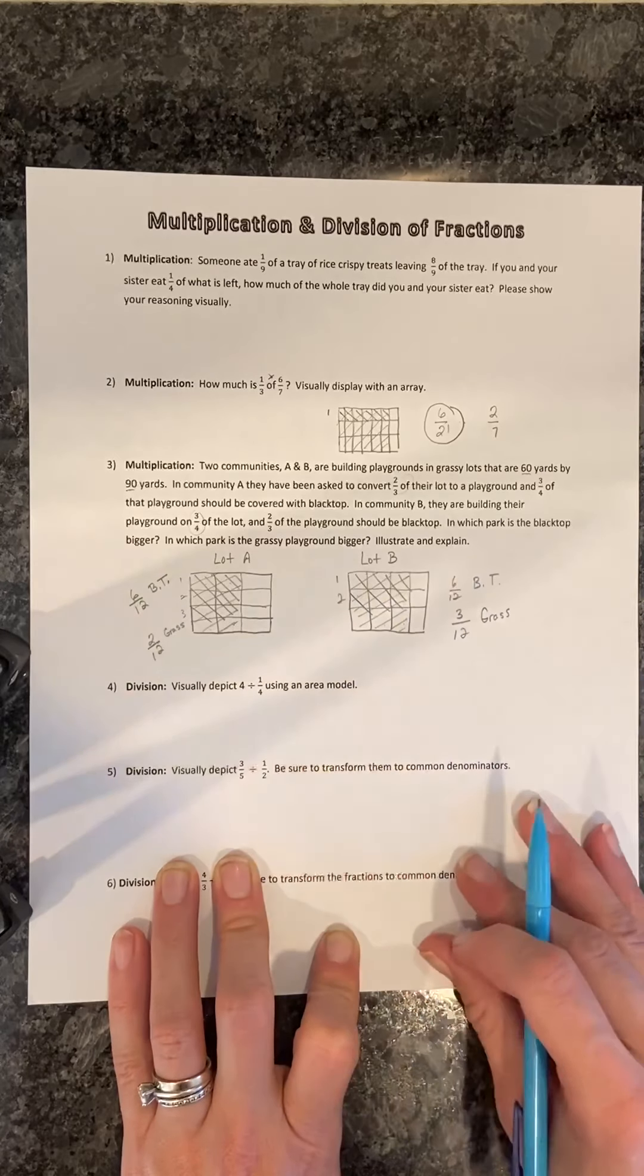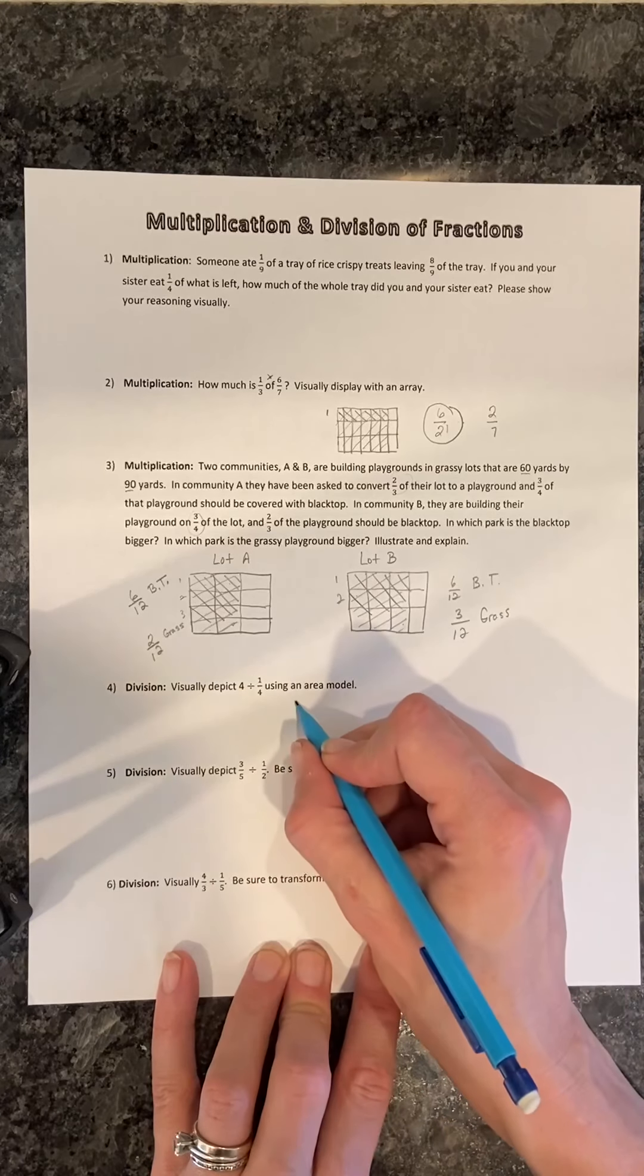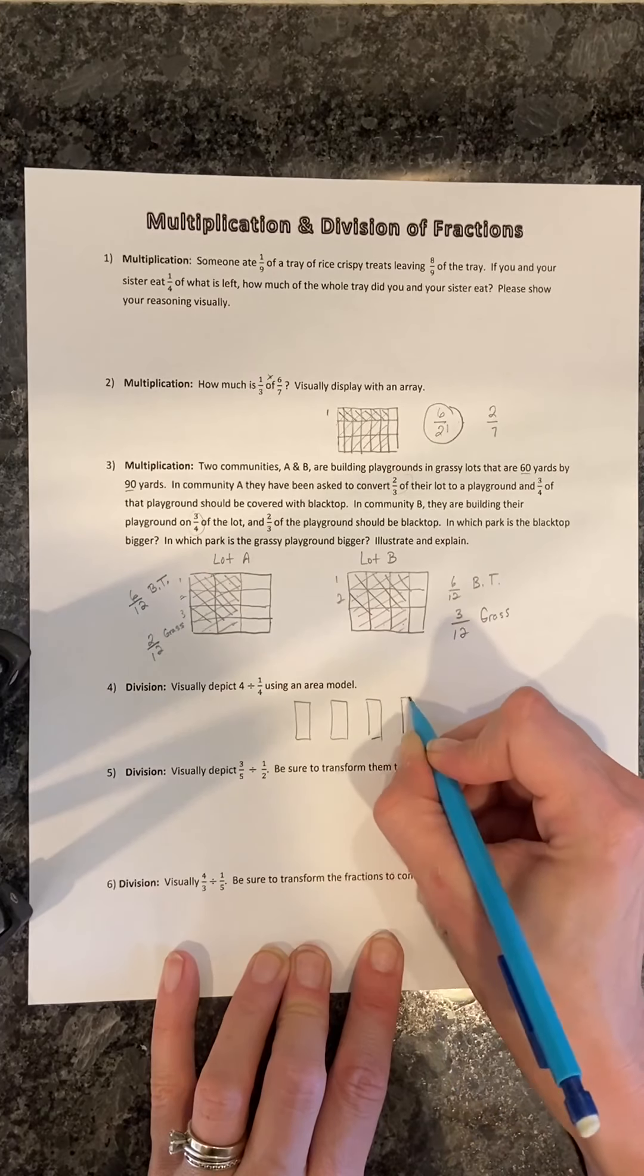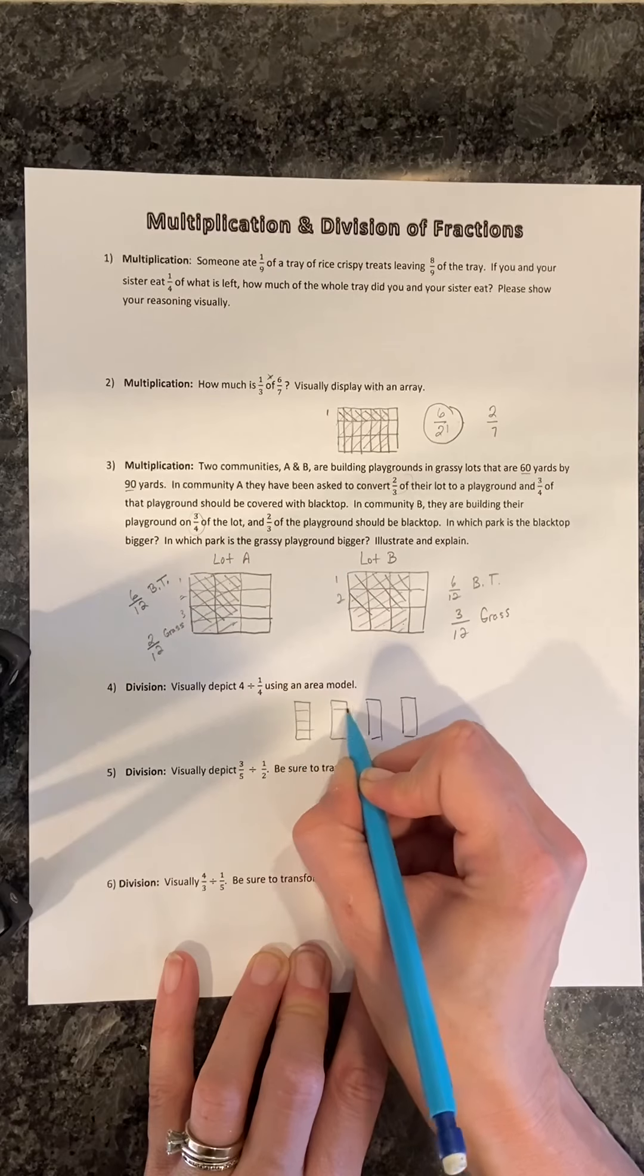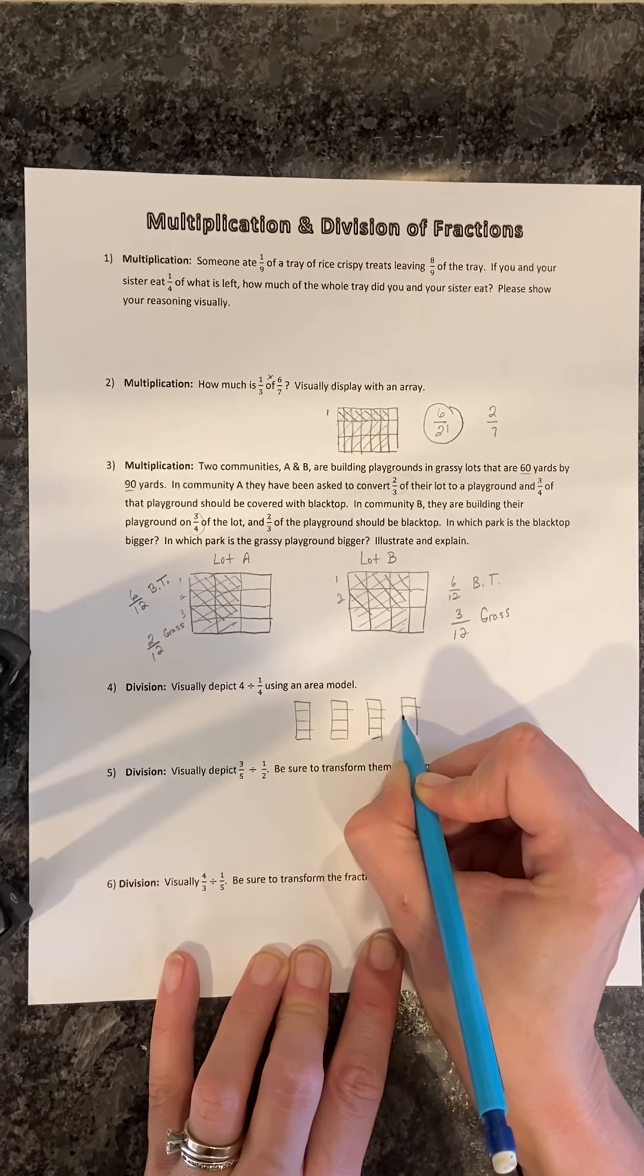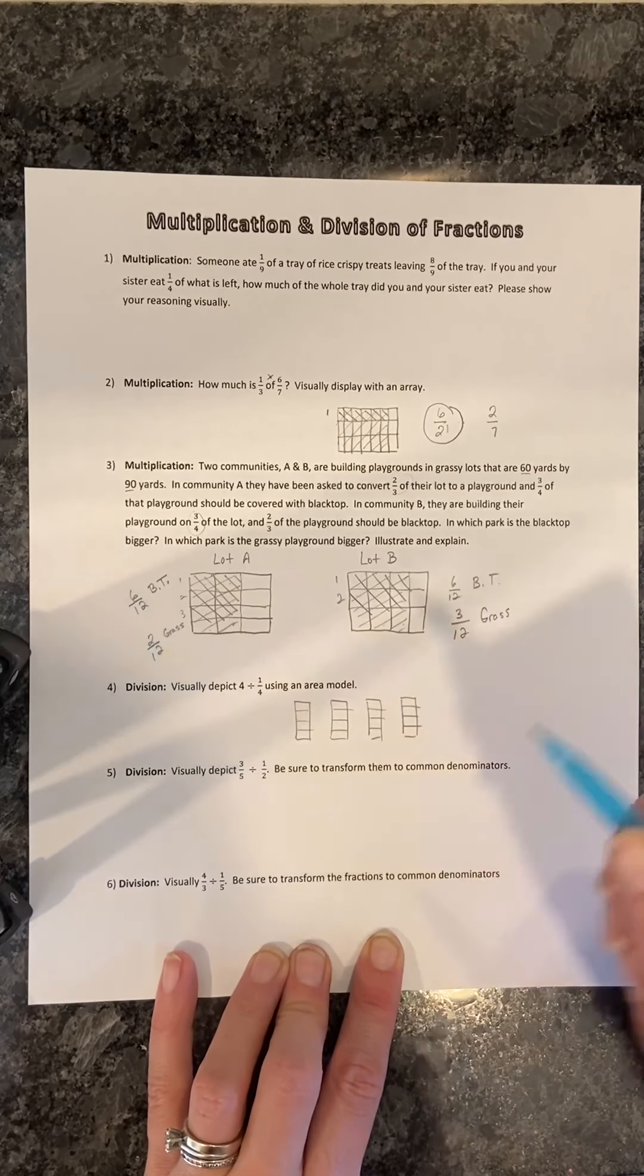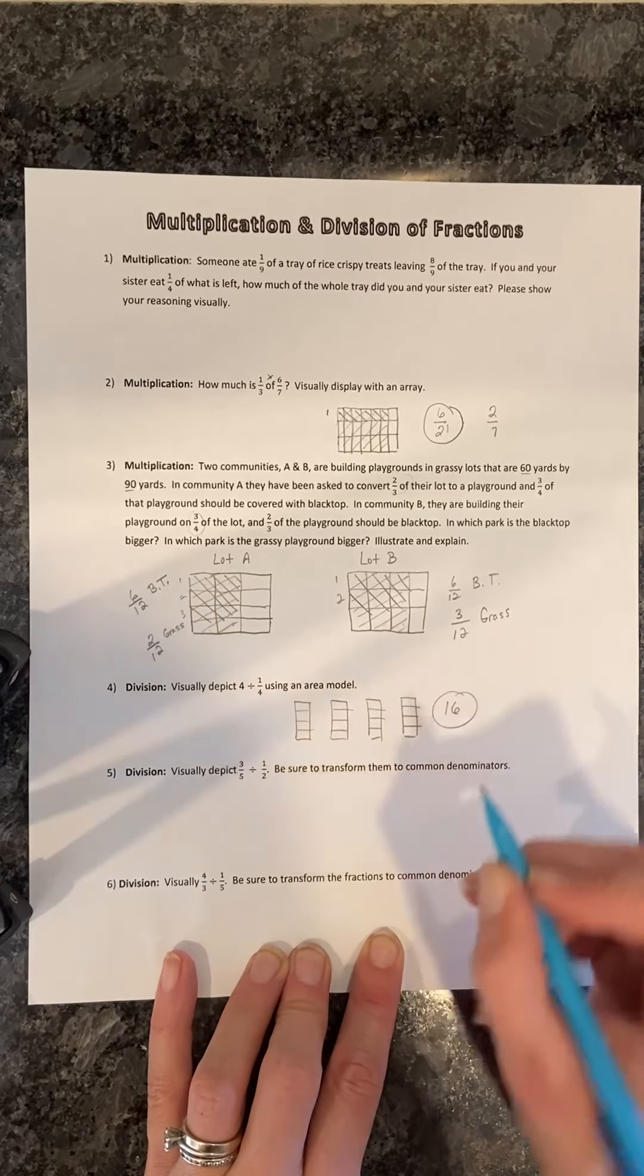Number four says visually depict four divided by one-fourth using an area model. So if we drew four bars, each representing a whole or a unit, and then we took those four bars and we divided them into fourths, we see that we have each individual now partitioned into four, and we have that happening four times. So you can fit a total of 16 little-fourths into all four of those. So the answer is 16, and students will be able to visually see that.